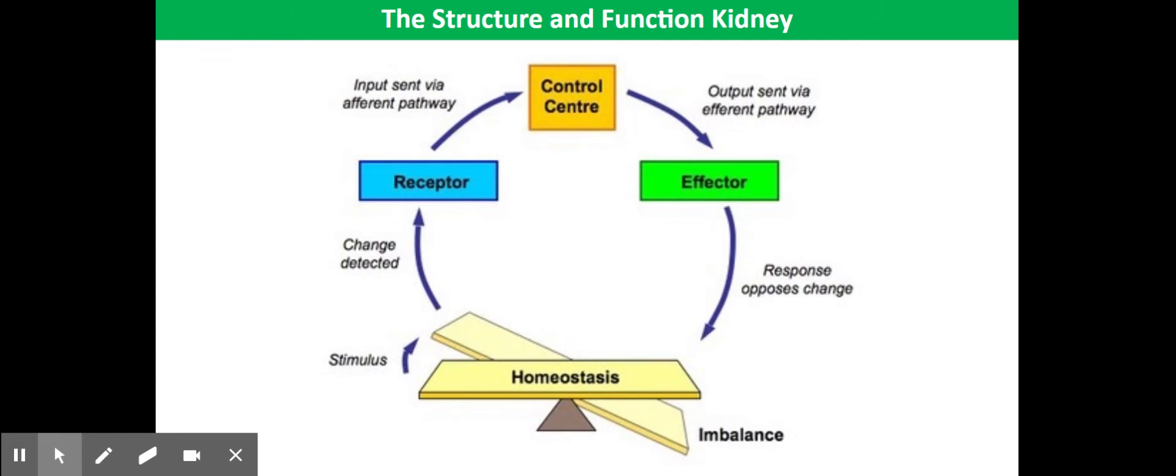Now that change is going to be detected by receptors. The receptors will send information to the control center, which in humans is our brain. The brain will then bring about a response and bring about those corrective mechanisms via the effectors, which will correct that imbalance and ensure homeostasis is achieved.